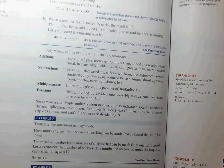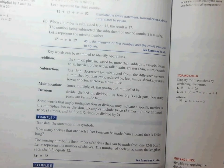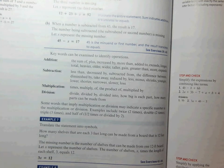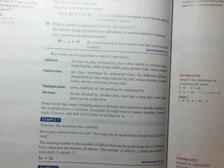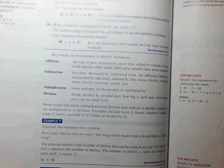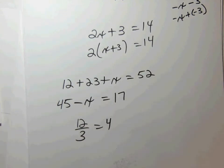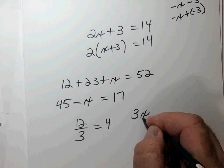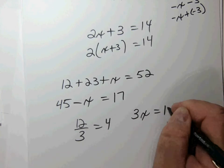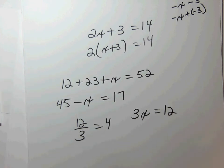Translate the statement into symbols: 'How many shelves that are 3 feet long can be made from a board that is 12 feet long?' I'm dividing a 12-foot board into smaller pieces. I'll have some unknown number of 3-foot pieces — so 3 times x number of boards equals 12. We'll ultimately divide by 3 to solve that equation.